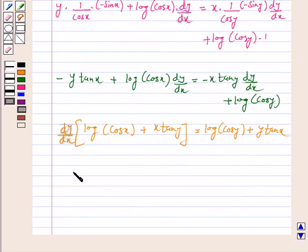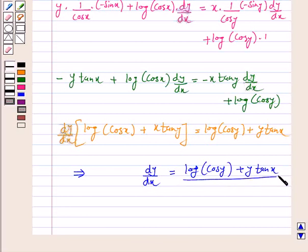This implies dy/dx = [log(cos y) + y tan x] / [log(cos x) + x tan y].